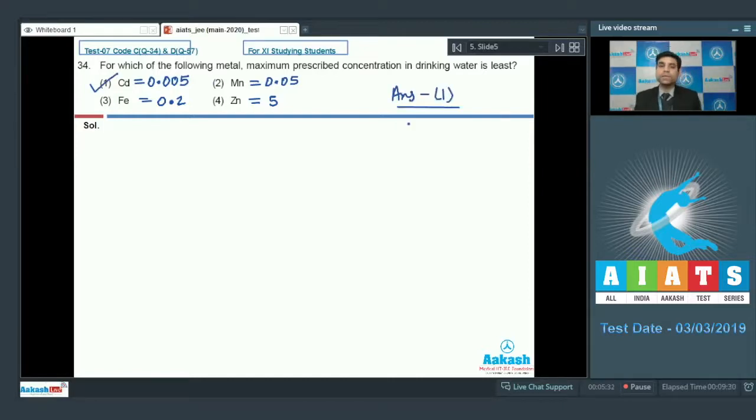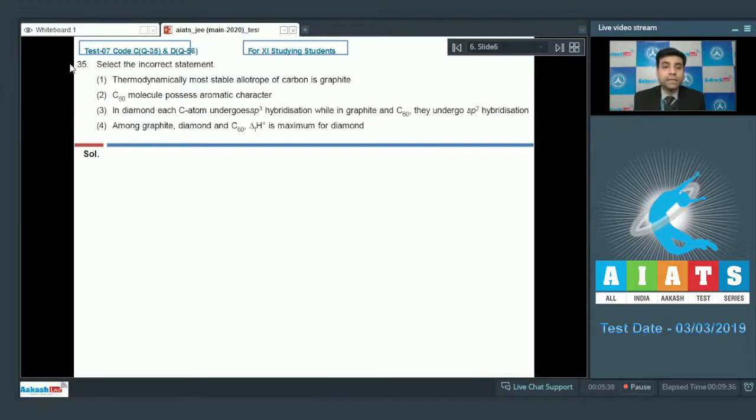Now let's move to the next question. This is the next question we have which says select the incorrect statement. First is thermodynamically most stable allotrope of carbon is graphite. Second is C60 molecule possesses aromatic character. Third is in diamond each carbon atom undergoes sp3 hybridization while in graphite and C60 they undergo sp2 hybridization.